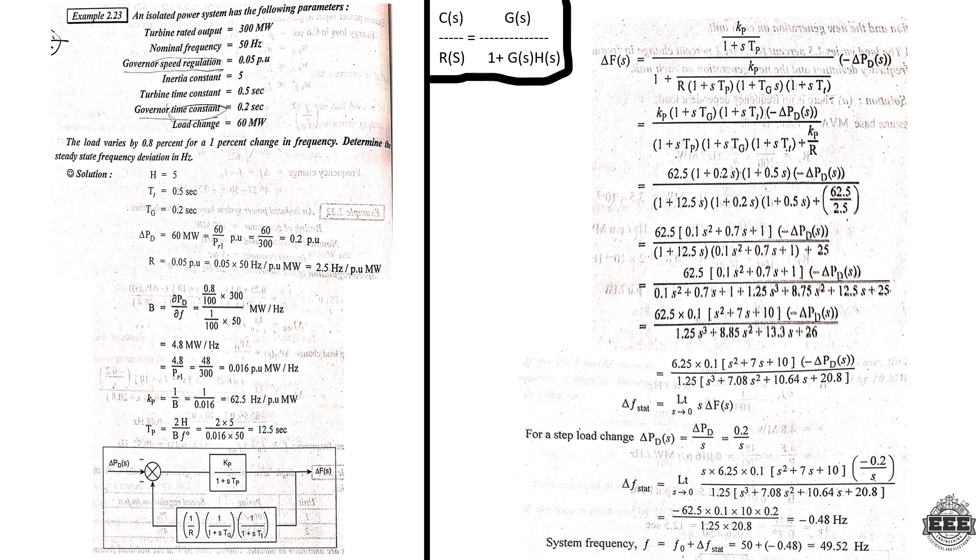In power system operation and control, the unit tool problem is required. An isolated power system has the following parameters: turbine output rating, frequency, speed governor, regulation value, inertia constant H, time constant, and so on.